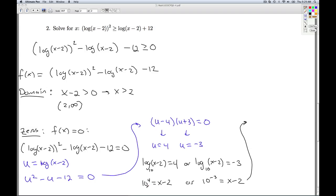And so what do I get for my final answers? Well, ten to the fourth is ten thousand. I have to add two to that. So I get ten thousand and two. So I get x is ten thousand and two. Or x is, this is ten to the minus third. That's one over a thousand. So it's one over a thousand plus two. Which is, you know, it depends how you want to do it. Two thousand and one over a thousand.